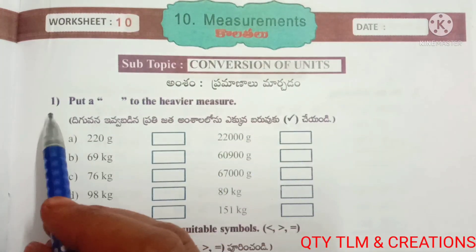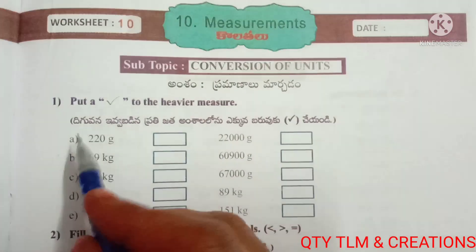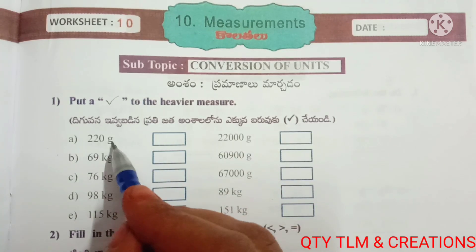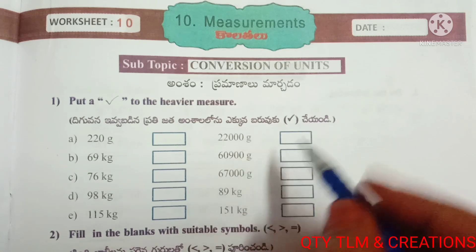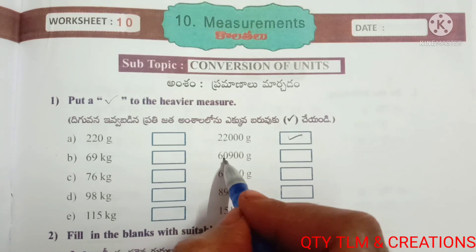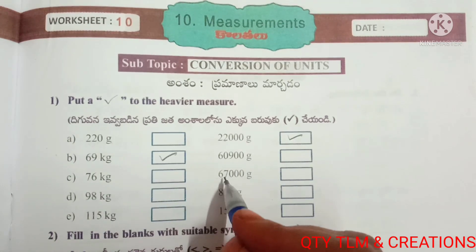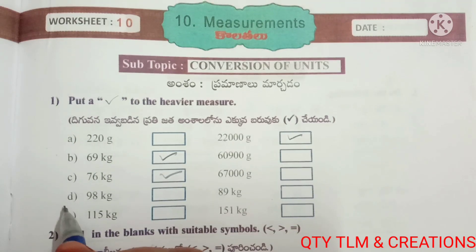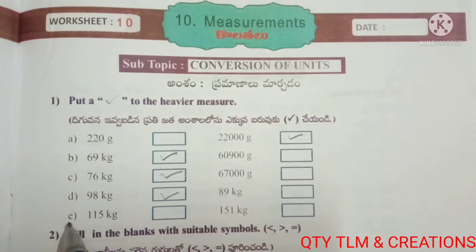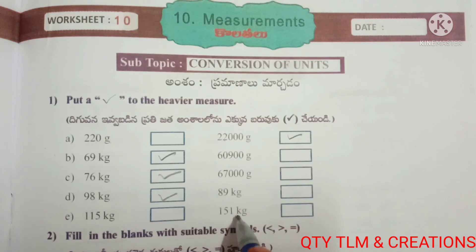Next, worksheet number 10, subtopic: conversion of units. First question: put a tick to the heavier measure. (a) 220 grams vs. 22,000 grams — 22,000 grams is heavier. (b) 69 kilograms is heavier than 60,900 grams. (c) 76,000 grams is heavier than 67,000 grams. (d) 98 kilograms is heavier than 89 kilograms. (e) 151 kg is heavier than 115 kg.